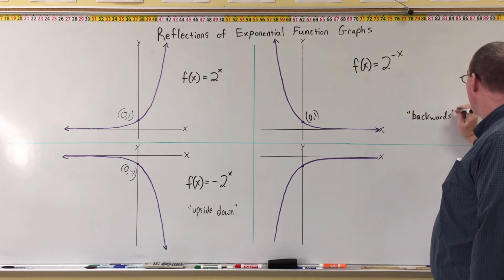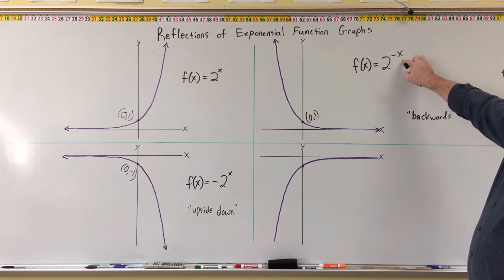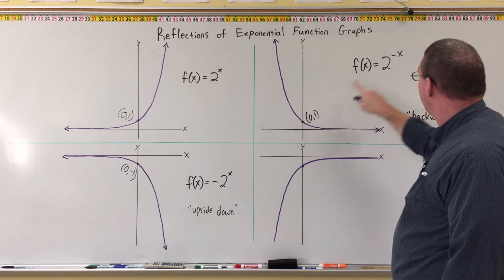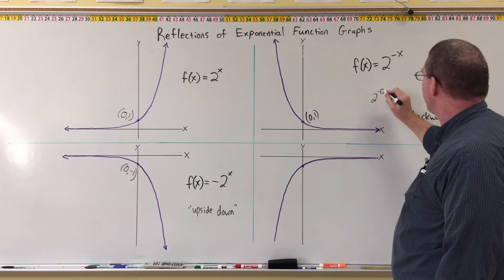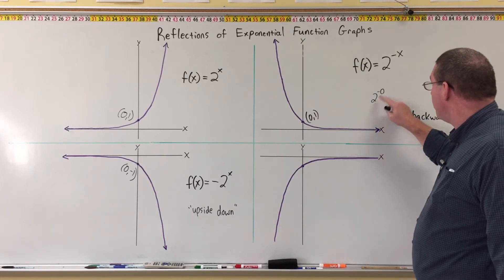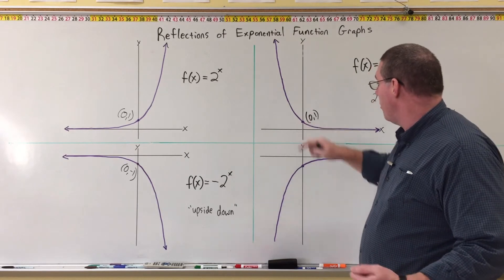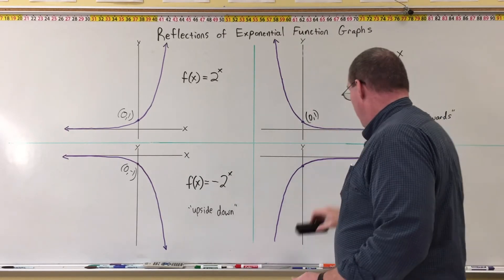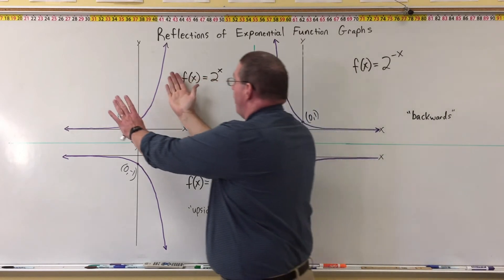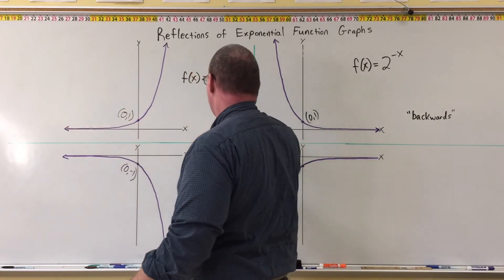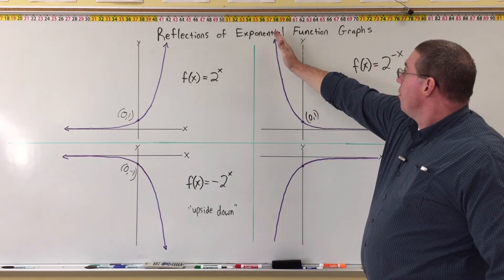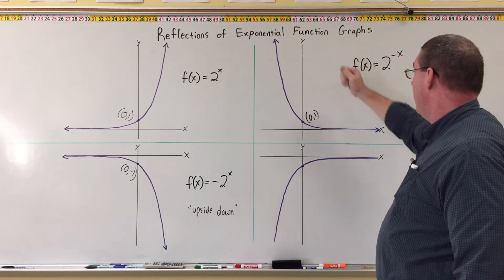This backwards graph is the function f(x) = 2^(-x) — the negative is on the exponent. If we plug 0 into this, we get 2^(-0). Well, negative zero is just zero, so it's still 1. 2^0 = 1, so the point is (0, 1). When you put a negative on the x, the graph flips backwards: flat to the right instead of flat to the left, steep to the left instead of steep to the right — but it still points upward because it's above the x-axis.